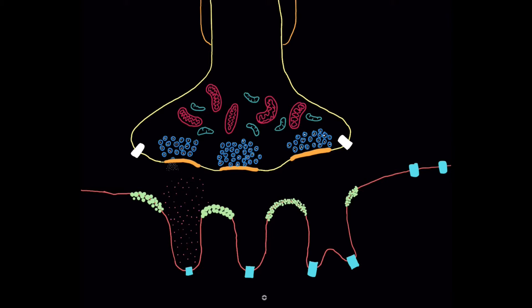I'll start by bringing up some annotations and orientate you to this diagram. You can see the motor neuron at the top, then the muscle membrane with all these folds which we'll talk about in a second, and then there's the gap between the two which we call the junctional cleft or sometimes the synaptic cleft. I'm going to take you through how nerve transmission comes down the motor neuron and leads to muscle contraction.